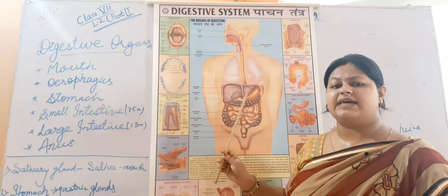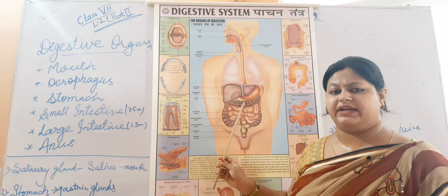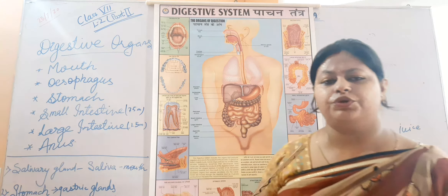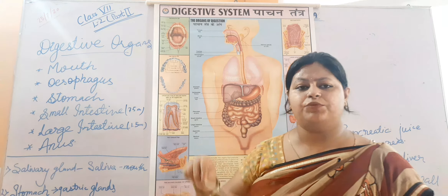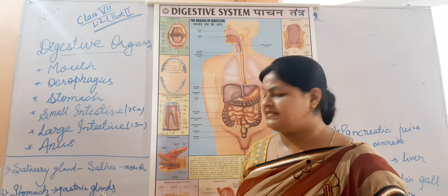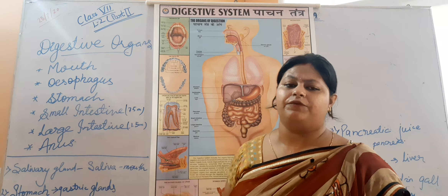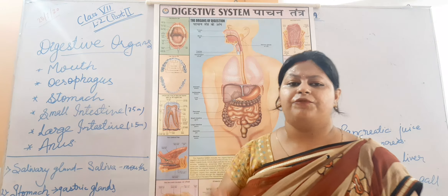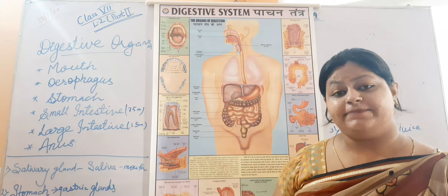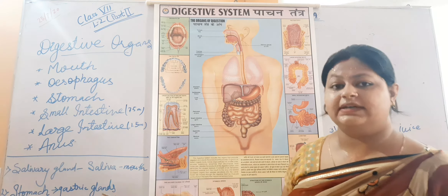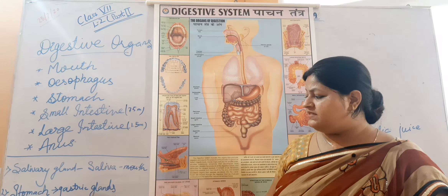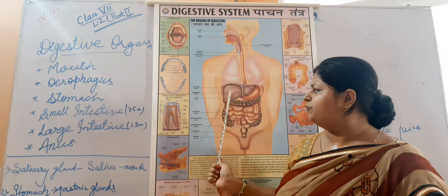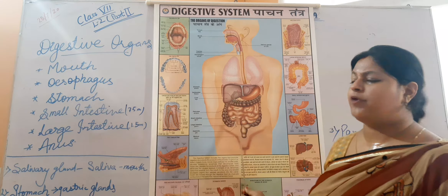In the stomach, mucus, hydrochloric acid, and gastric juice are secreted, which help the process of digestion. Mucus helps the food to remain moist and move downward. Hydrochloric acid, secreted in our stomach, helps to kill all the bacteria and germs that enter with our food — they are killed by the hydrochloric acid secreted by the gastric glands. After the stomach, the food is transferred to the small intestine.